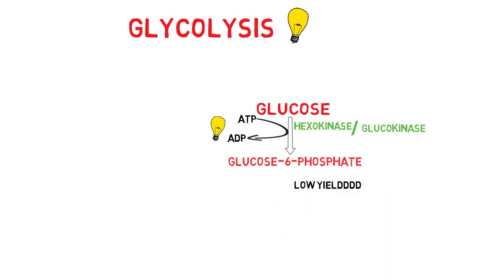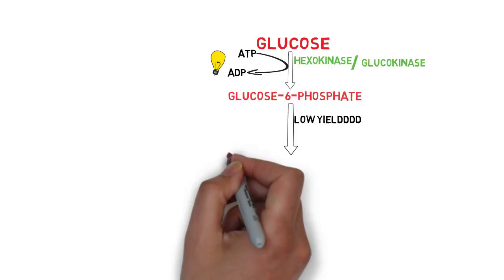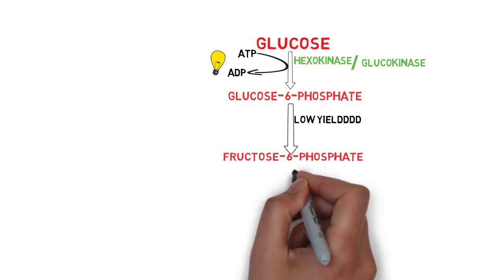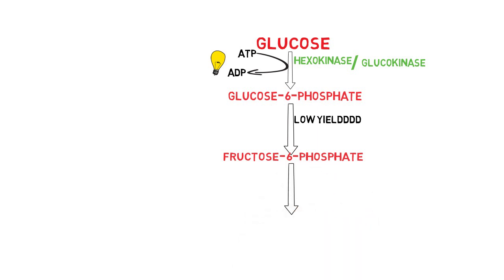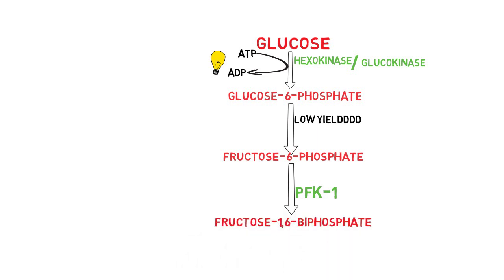After glucose-6-phosphate is formed, it is converted into fructose-6-phosphate by a low-yield enzyme — you don't have to remember the name. After fructose-6-phosphate is formed, here comes the most important enzyme of glycolysis, that is phosphofructokinase-1, written as PFK1. It converts fructose-6-phosphate into fructose-1,6-bisphosphate, and in this process ATP is converted into ADP. So up to fructose-1,6-bisphosphate, we have the consumption of two ATP molecules.